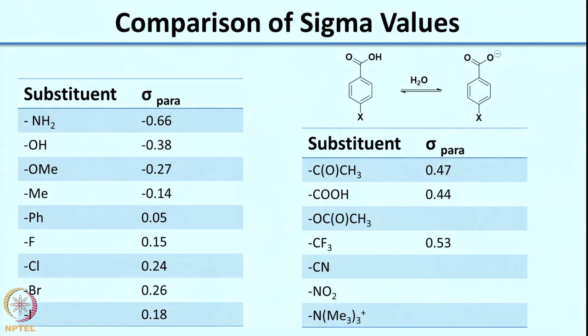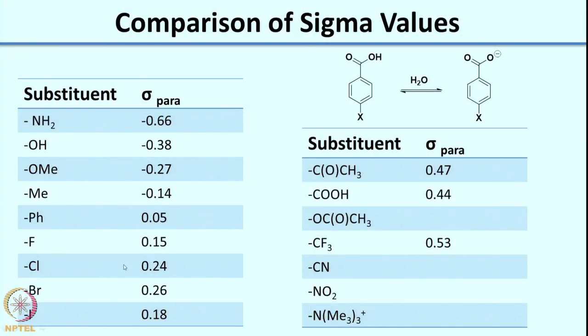Based on resonance, one would assume halogens are electron releasing, but based on the electronegativity of these atoms they behave as withdrawing groups. So what you see is a mix of these effects — you would not see a large negative or large positive value. The values range from 0.15 for fluorine to 0.18 for iodine when you go from fluorine to iodine, with 0.24 and 0.26 in between. There is no clear trend as it is a mix of both effects.